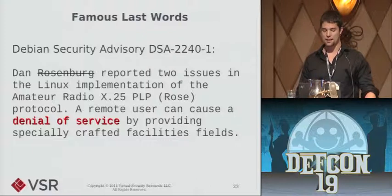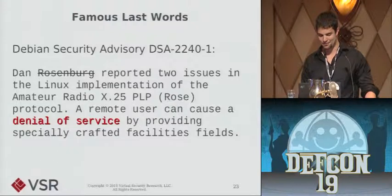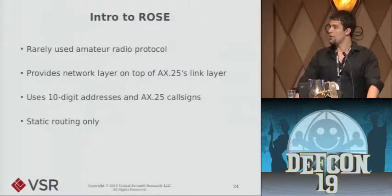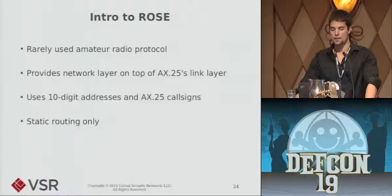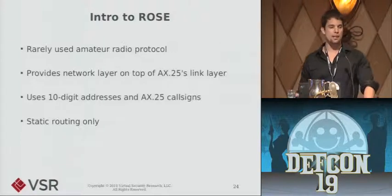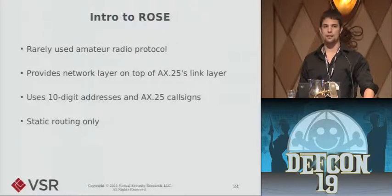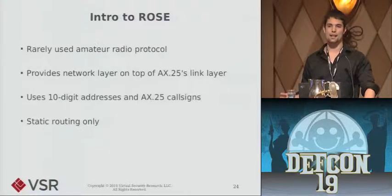The advisory reported two issues in the Linux implementation of the amateur radio X.25 PLP protocol. ROSE is a fairly rarely used amateur radio protocol — it's a network layer that sits on top of AX25, which is a more commonly used packet radio protocol. In addition to seven-byte AX25 addresses, ROSE nodes have ten-digit numeric addresses to identify them. It supports only static routing using a digipeater mechanism where a host can say: I'll accept packets from this AX25 callsign and forward them along to this one.